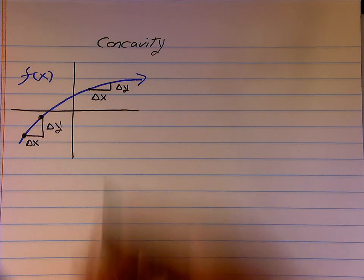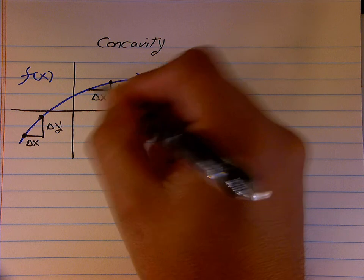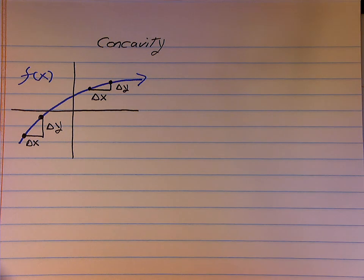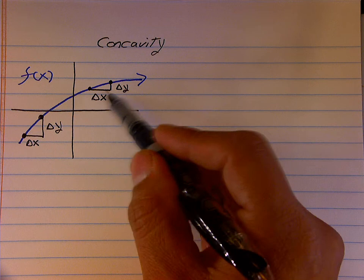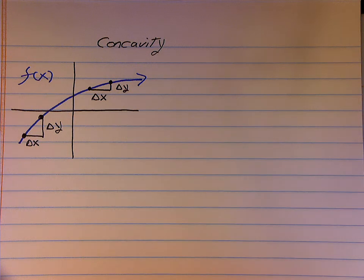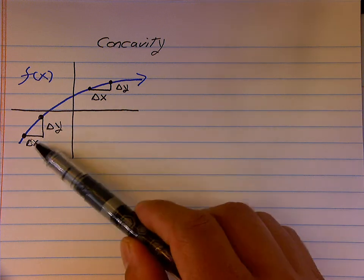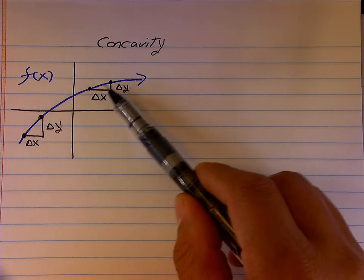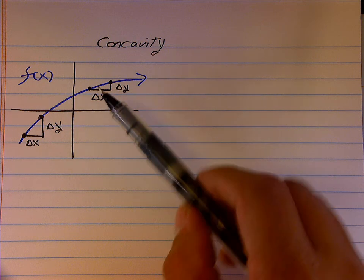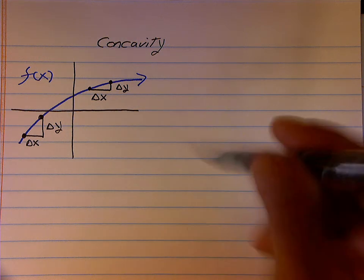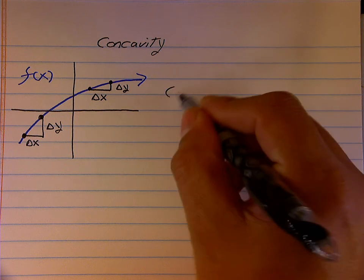In both of these triangles that I've drawn to illustrate a rate of change, they both have approximately the same change in x. But notice the change in y from the first pair of points to the second pair of points has changed drastically. This type of change in the average rate of change is described by concavity. So I have a function that's increasing, but my rate of change is decreasing. We call this concave down.